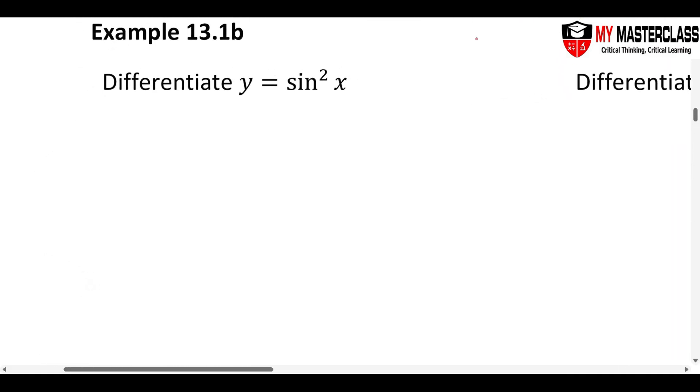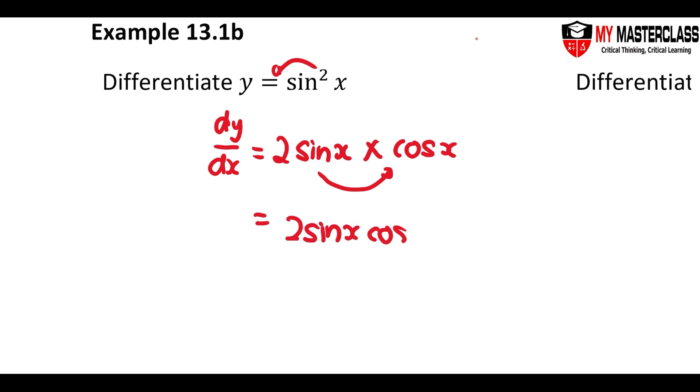Differentiate sine square x. Power bring down. So dy dx is equal to power bring down 2. The sine x remain. Now you multiply by differentiate the trigonometry. Differentiate sine become cosine x. Is there any angle to differentiate? Actually, differentiate x is 1. So that's why usually we do not write. And that is the answer 2 sine x cosine x.